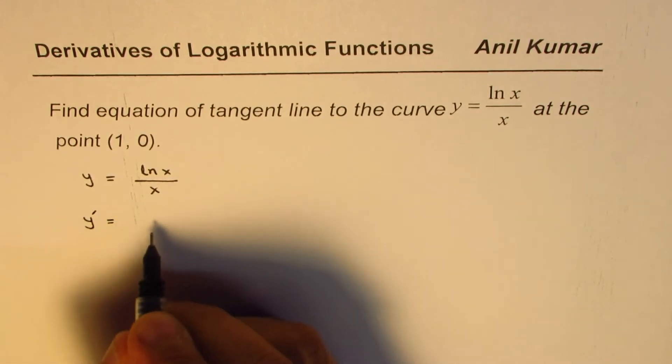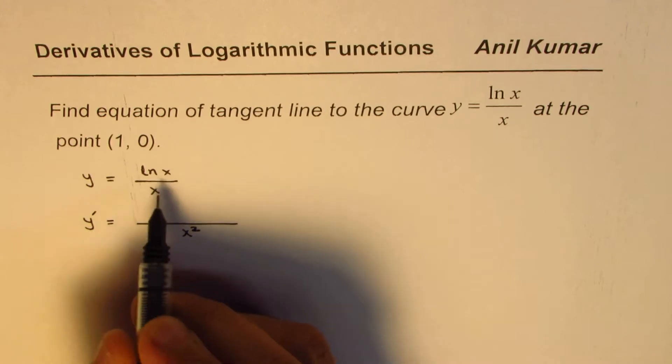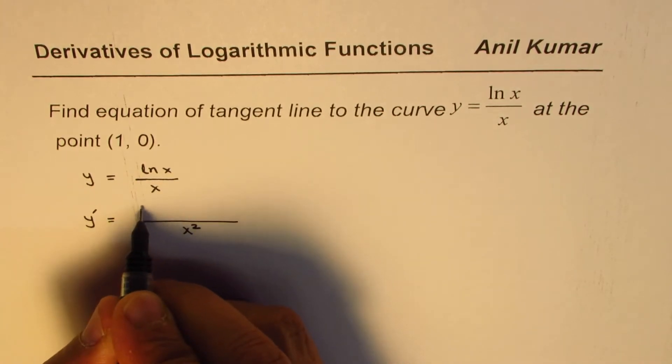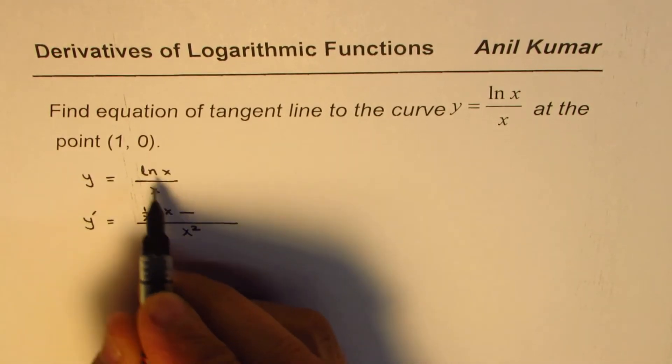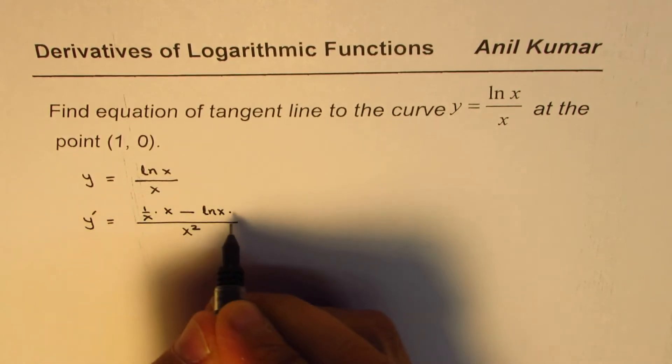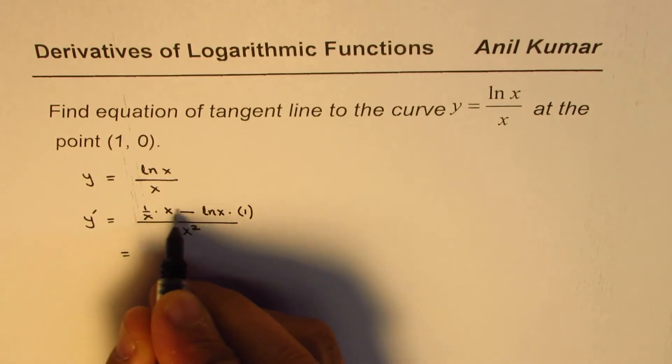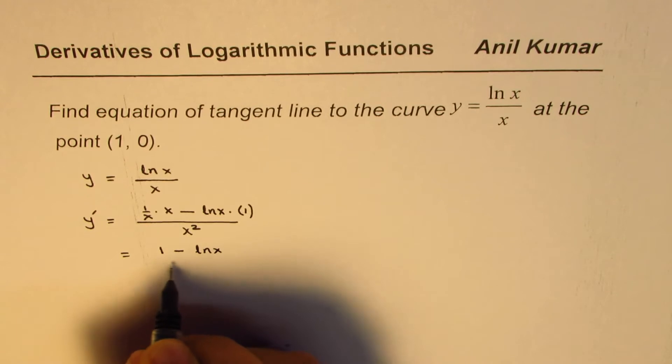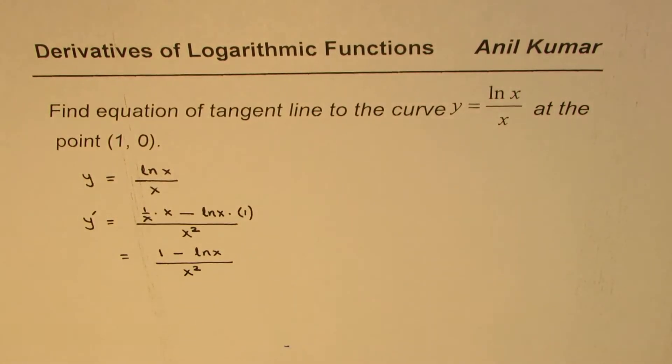So the derivative will be denominator squared, which is x squared. We are applying the quotient rule. Derivative of ln x is 1 over x times x minus ln x times derivative of x which is 1. So that gives us x divided by x is 1, 1 minus ln x divided by x squared. So that becomes the derivative of this function.